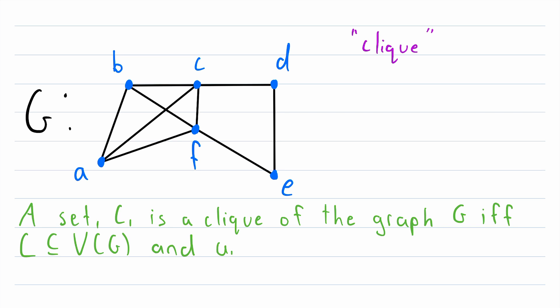Two vertices, u and v, being in the clique C, and them being distinct, so u is not equal to v. This implies that u and v are adjacent in G, which means that uv is an element of the edge set of G, because there is an edge that joins them.